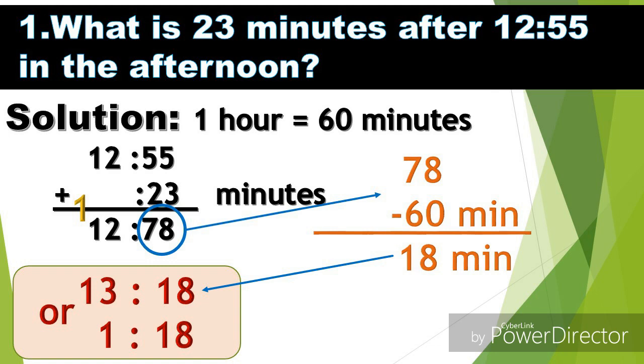Let's start with problem number one. What is 23 minutes after 12:55 in the afternoon? The solution: in one hour we have 60 minutes. Ang gagawin natin, i-add natin yung 12:55 plus 23 minutes. The answer is 12 hours and 78 minutes.